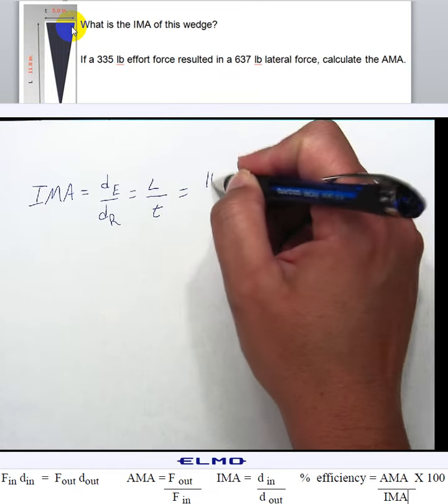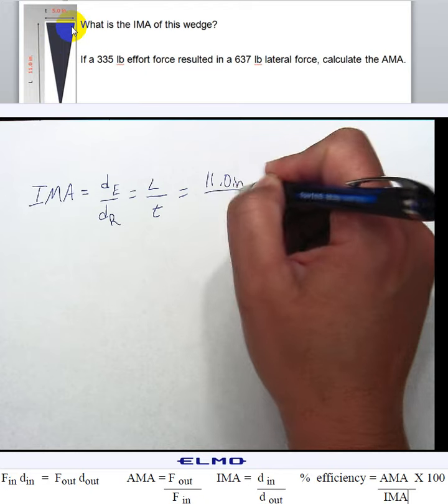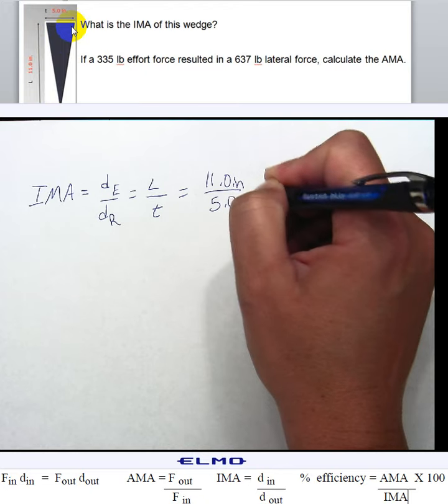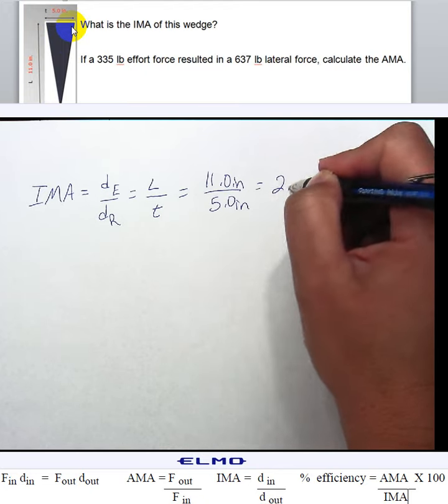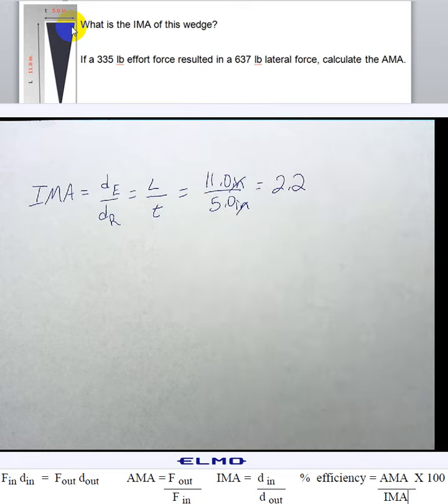So, I have 11.0 inches over 5.0 inches, and that equals 2.2. Inches cancel out, so I won't have a unit.